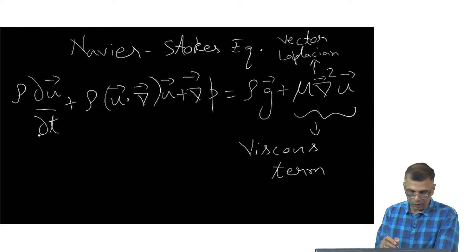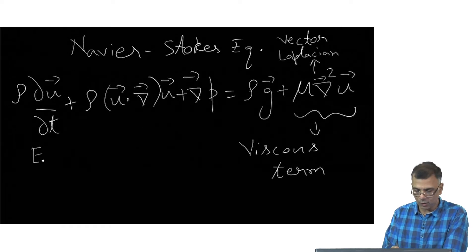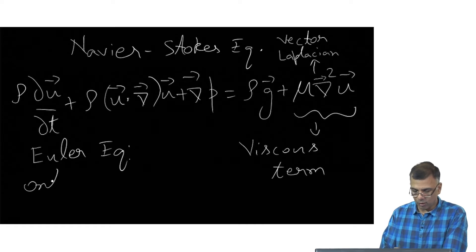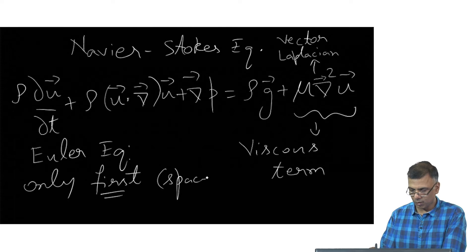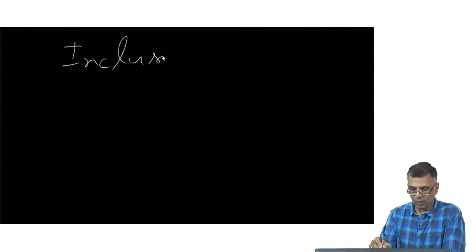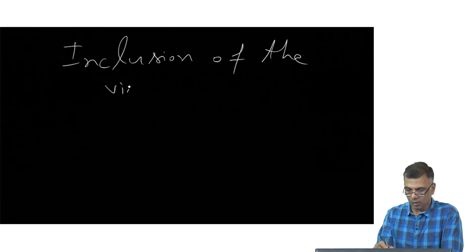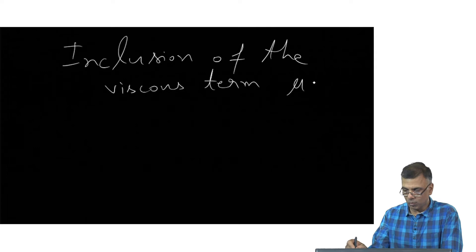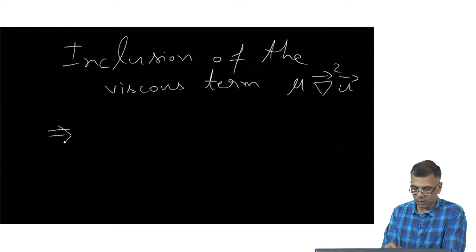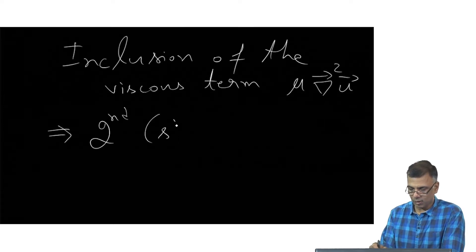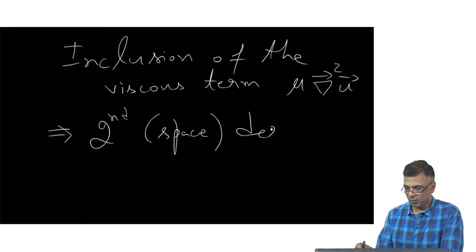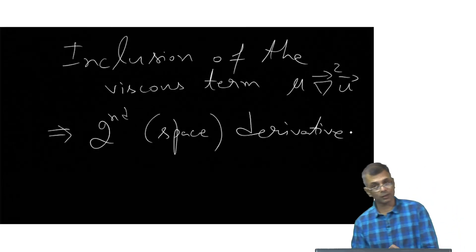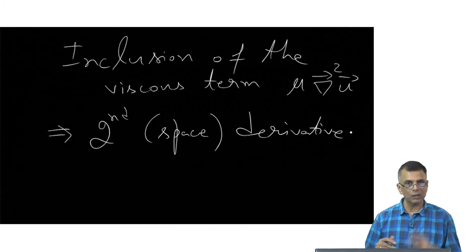The inclusion of the viscous term mu gives rise to second space derivatives. This completely changes the character of the equation — this is the main point with respect to boundary conditions. When you have two derivatives, you need two boundary conditions. When you have one derivative, you need one.